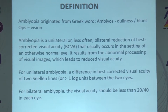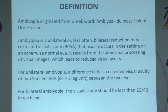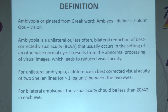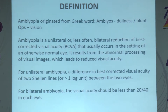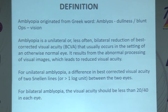Amblyopia may be unilateral or, less often, bilateral reduction of best corrected visual acuity that usually occurs in the setting of an otherwise normal eye. It results from abnormal processing of visual images which leads to reduced visual acuity. For unilateral amblyopia, a difference in best corrected visual acuity of two standard lines between the two eyes is taken. For bilateral amblyopia, visual acuity should be less than 20/40 in each eye to label it as amblyopia.